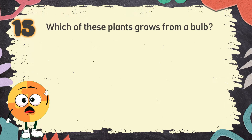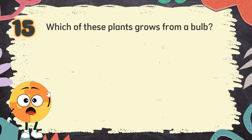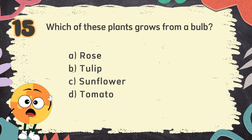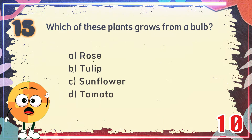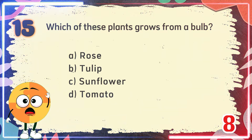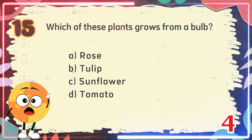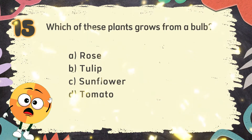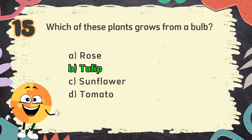Number 15: Which of these plants grows from a bulb? The choices are: A. Rose, B. Tulip, C. Sunflower, D. Tomato. The correct answer is B. Tulip.